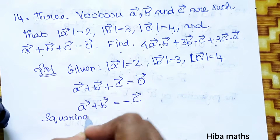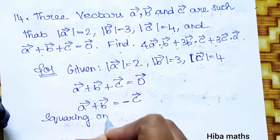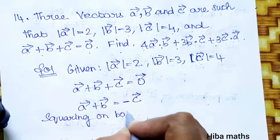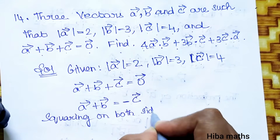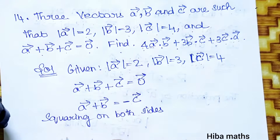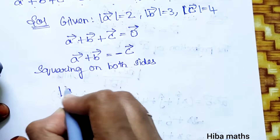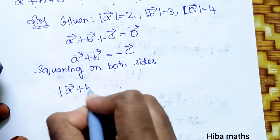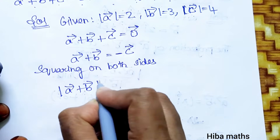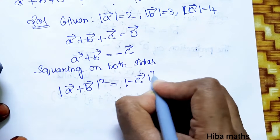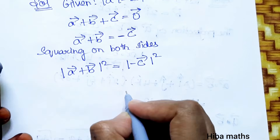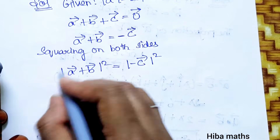Squaring on both sides: modulus of (a vector + b vector) whole square is equal to modulus of (minus c vector) whole square.